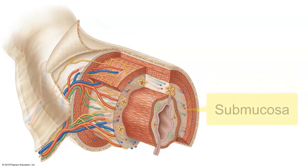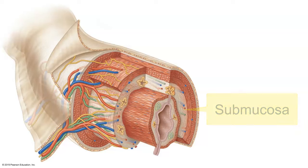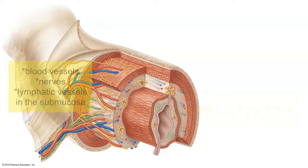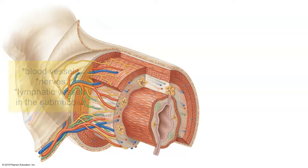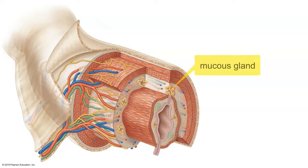The next region, the submucosa, is a thicker area of loose connective tissue. This is where the blood supply is distributed through the GI tract, along with the nerve supply and lymphatics. It also contains glands — here we can see some mucus glands.